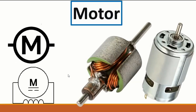Here we have the motor. The motor has two parts: the stator, which is stable, and the rotor. The motor works due to the current that passes through the inductor. This is the symbol for the motor — here we have the rotor and this is the stator.